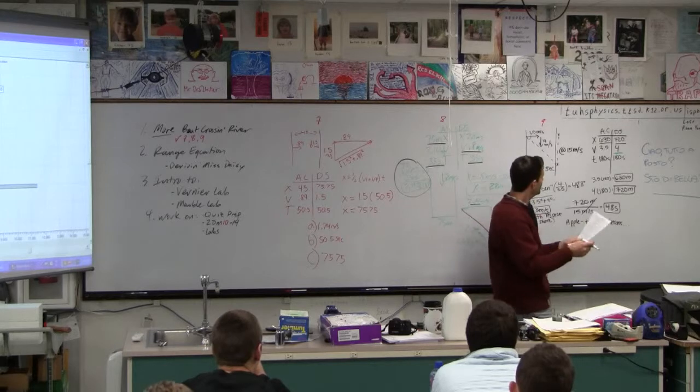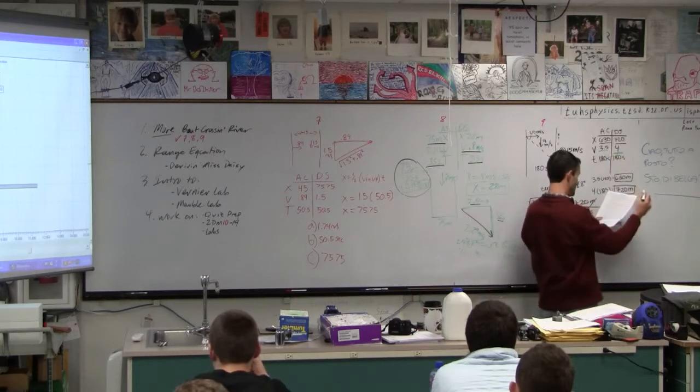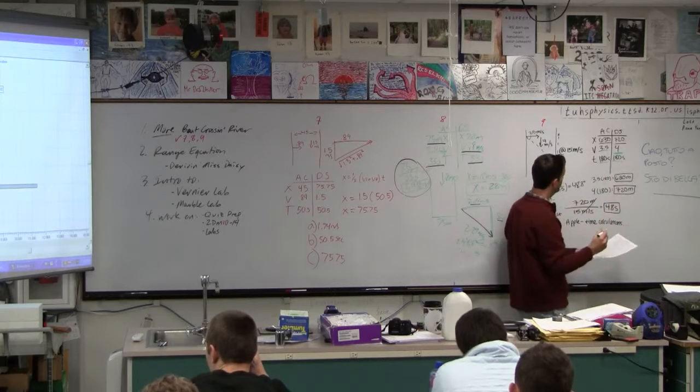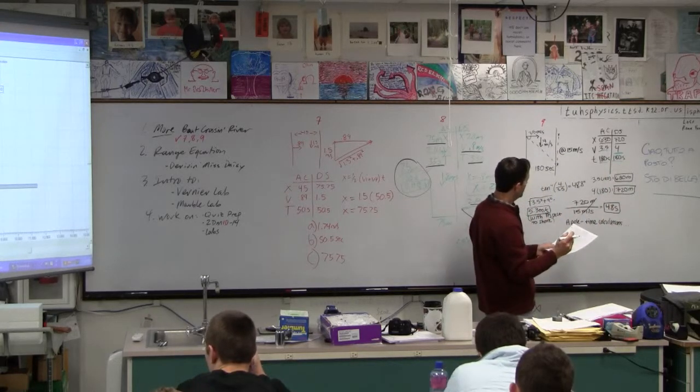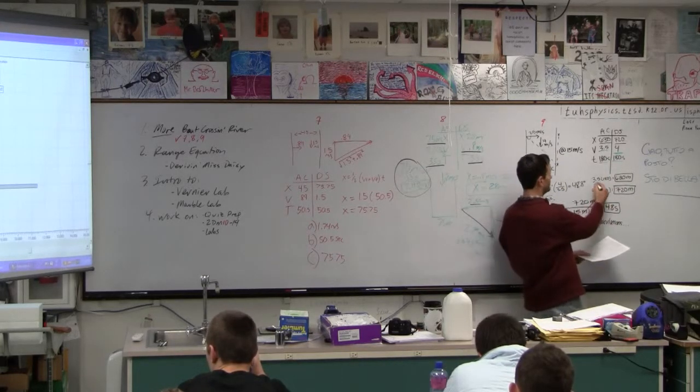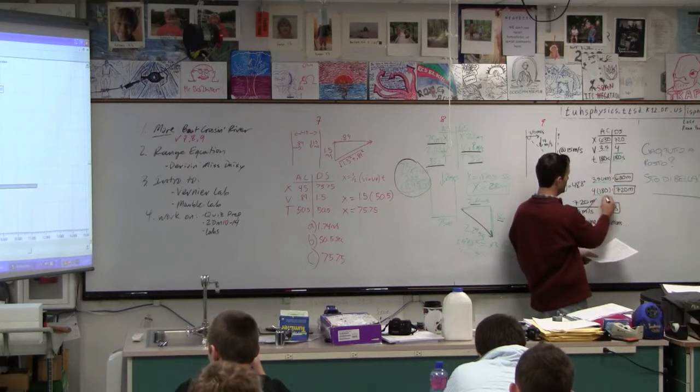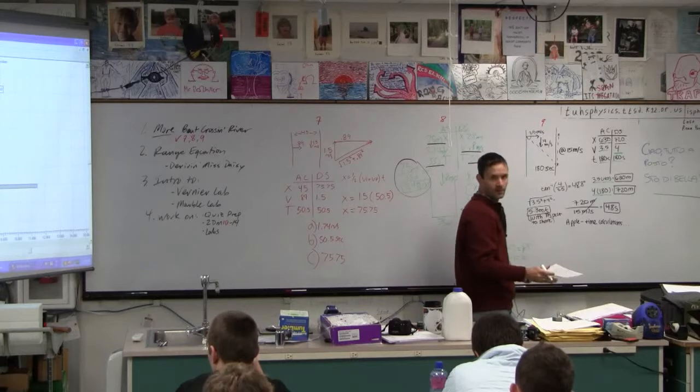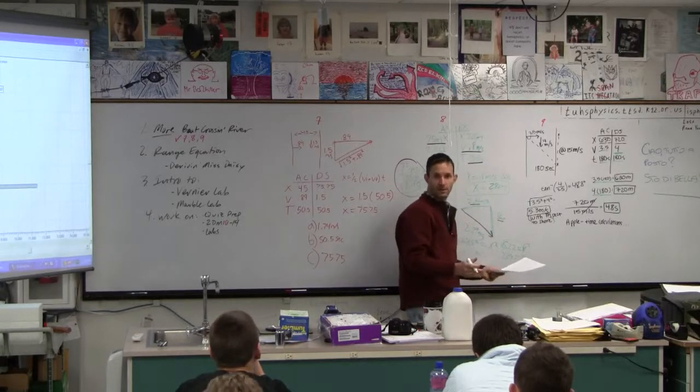So there we have it. He can swim that speed, and it takes him 180 seconds to cross the river. That's for both. And I guess it's just speed times time. Speed times time. This is how far downstream, how far across. Are we good on that? I mean, that's all it is, right?